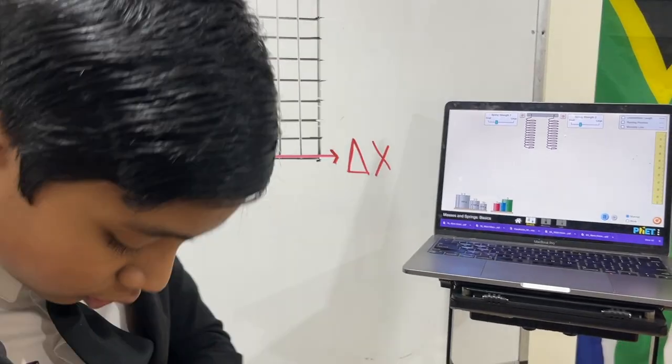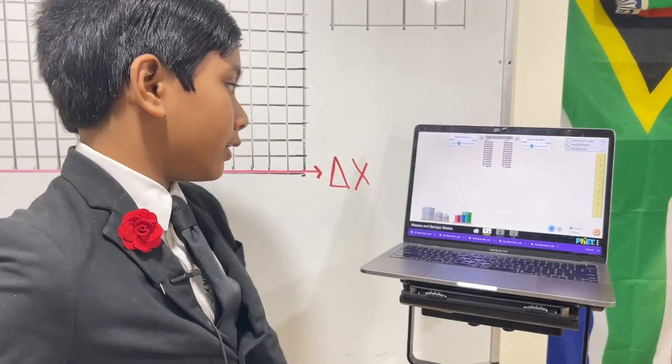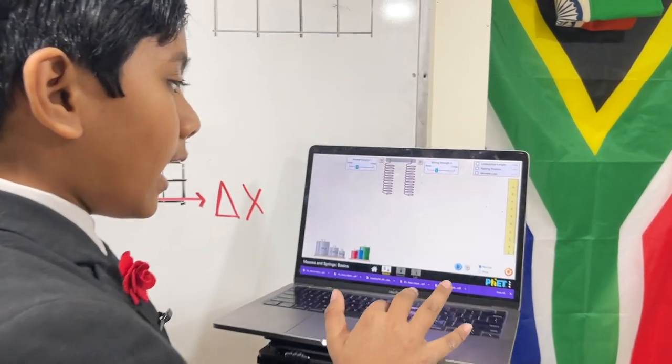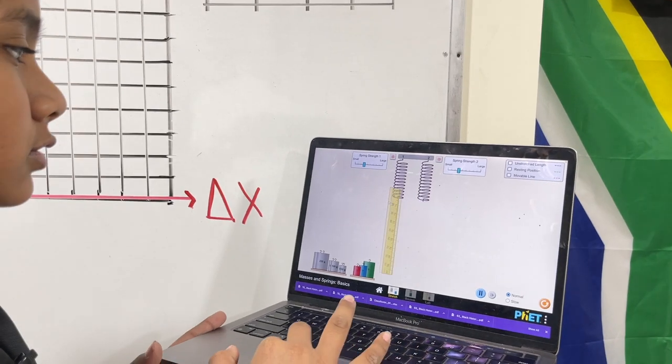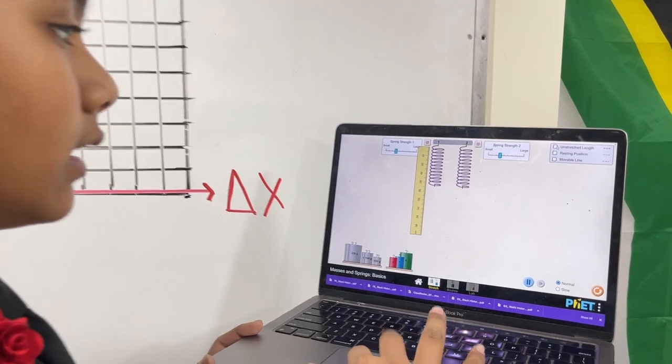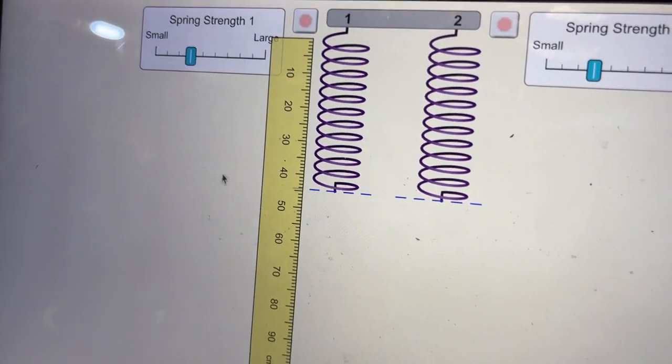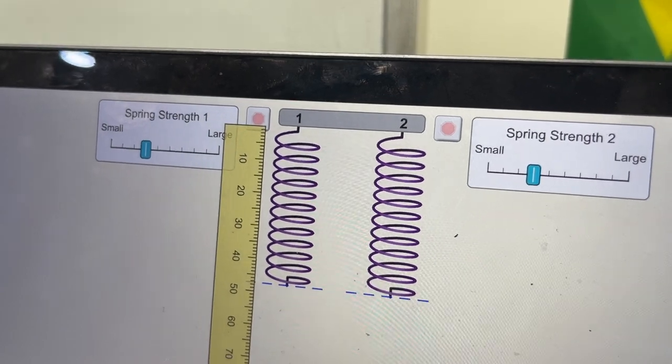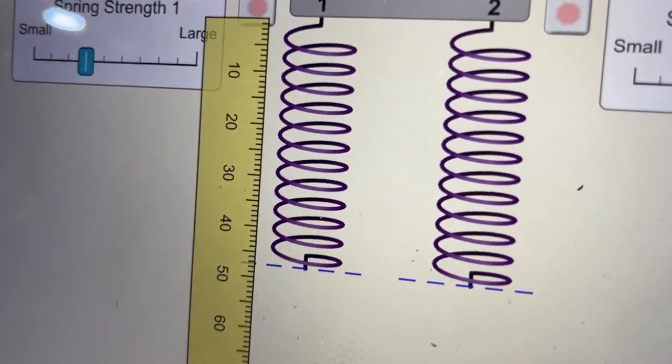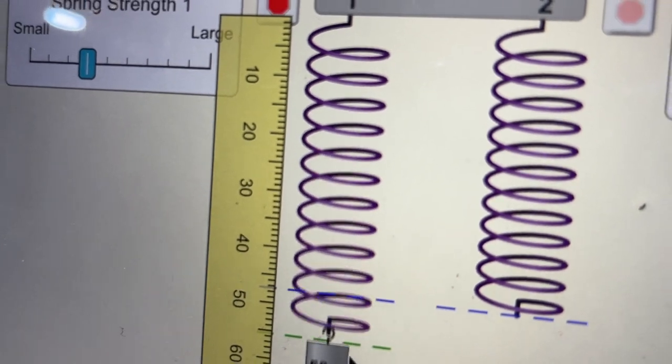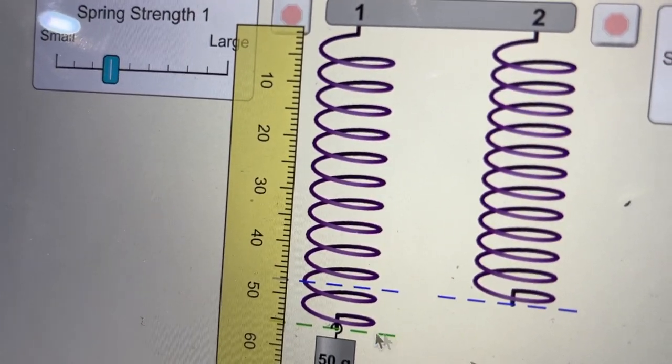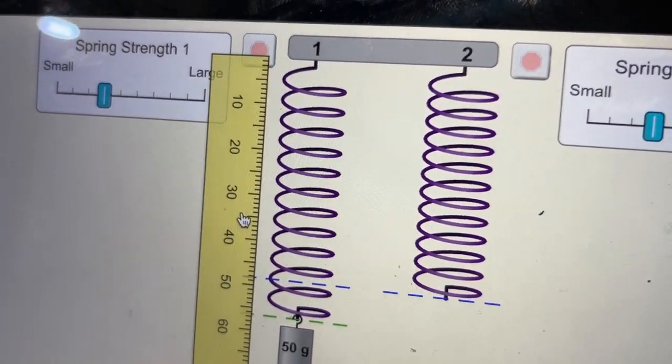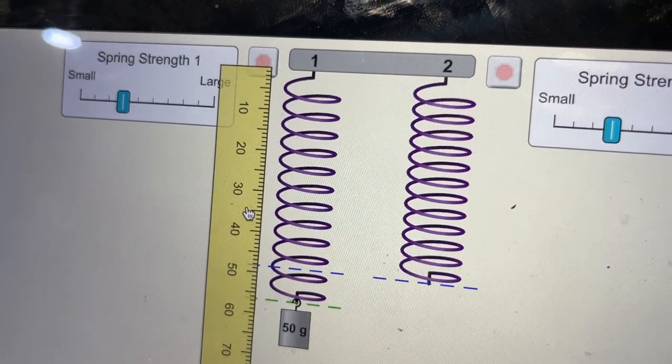So let me put this marker in my pocket, because I don't need a marker to execute the simulation. So here we have a ruler. What I'm going to do is slide that ruler over here, and then get the unstretched length and the resting position of this spring.